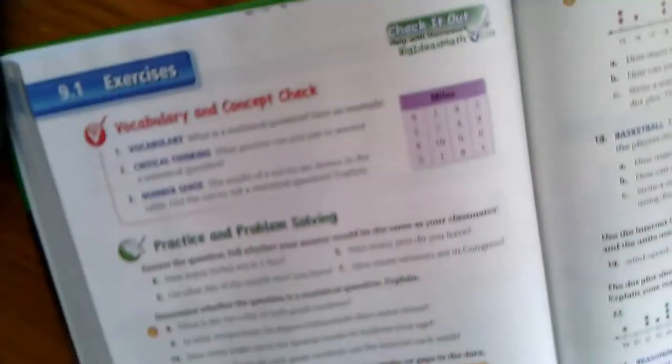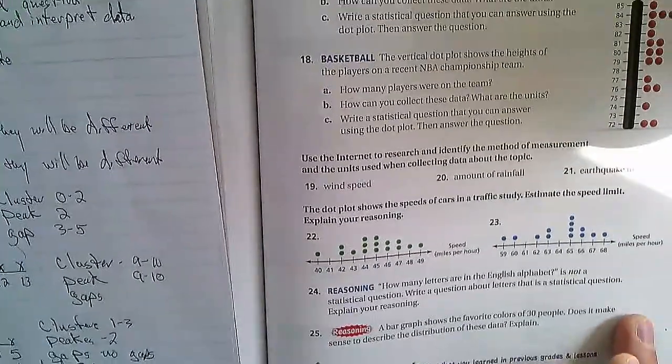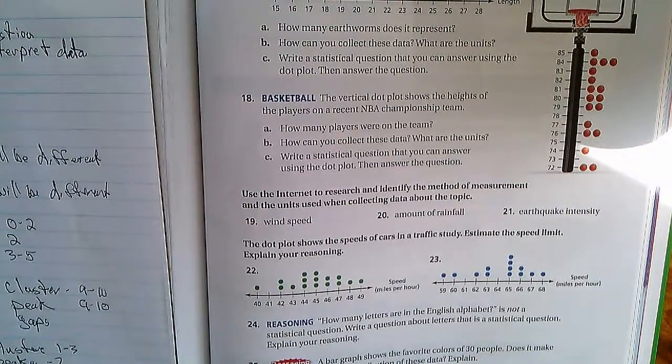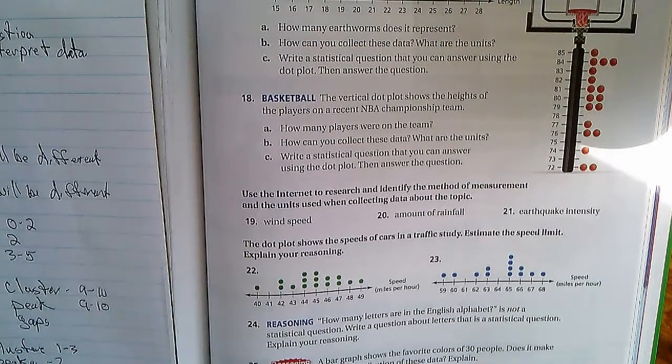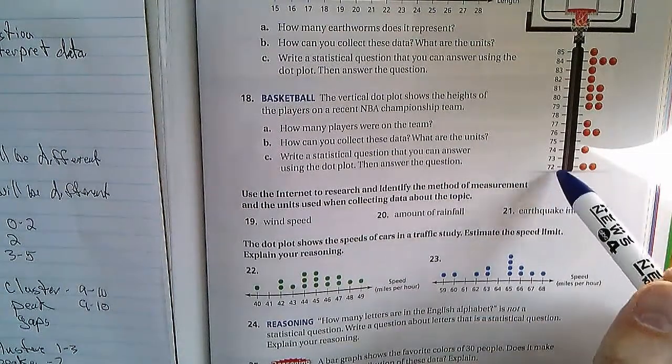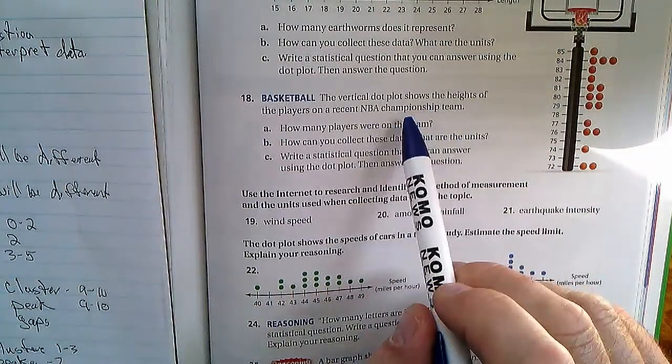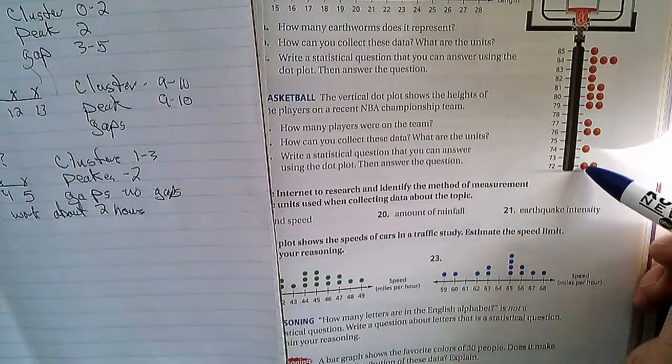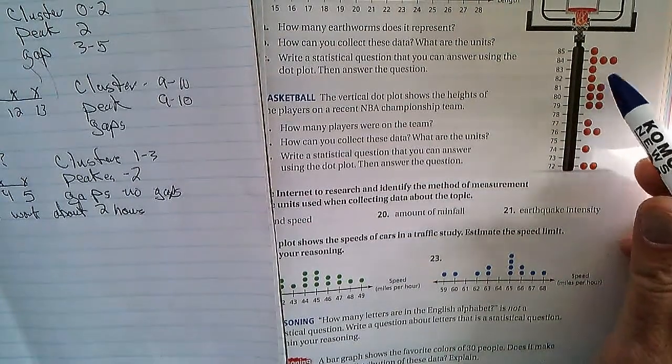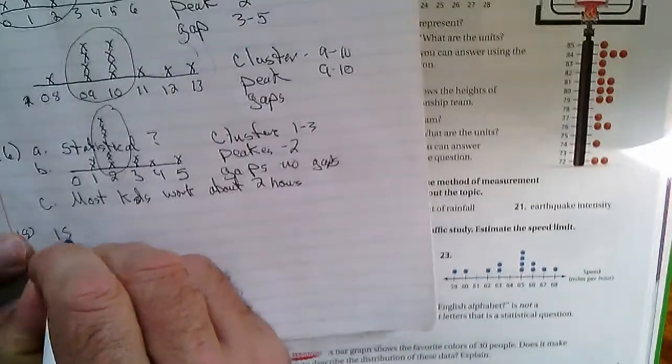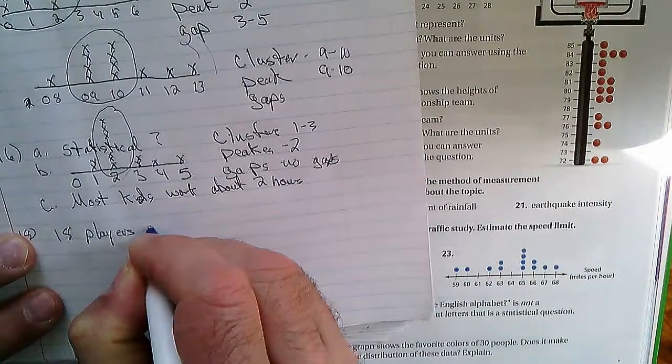Number 18: the vertical dot plot shows the heights of the players on a recent NBA championship team. How many players were on the team? This should be pretty easy. Basketball: one, two, three, four, five, six, seven, eight, nine, ten, eleven, twelve, thirteen, fourteen, fifteen, sixteen, seventeen, eighteen. There are eighteen players on the team.